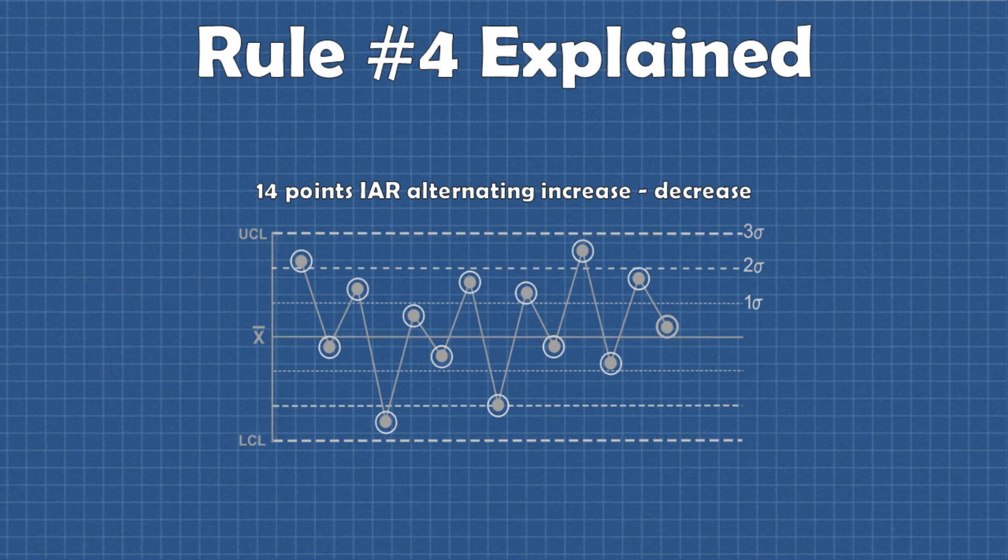Systemic over-control happens when something or someone is over-correcting the process and as a result is causing an oscillating up and down pattern in the data.